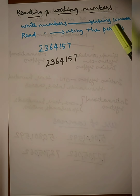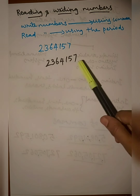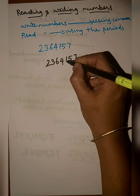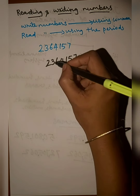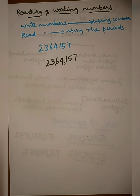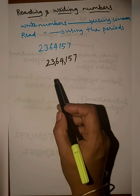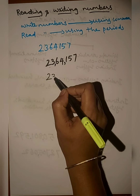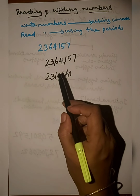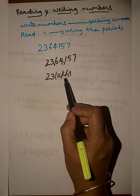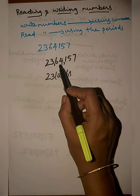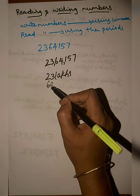Writing numbers using commas — place the commas in the Indian number system. The first comma goes after three digits, the second comma goes after two more digits. To read this number, the first step is to identify how many lakhs there are. Here it is 23 lakh.